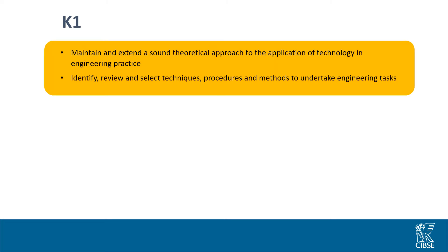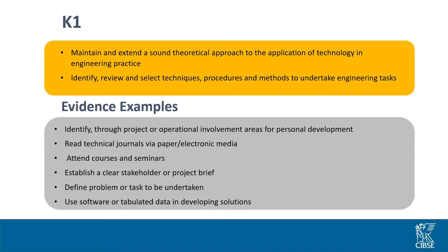K1 is all about Engineering Principles. You will need to address some of the engineering theory and techniques you have picked up during the course of your apprenticeship and how you have demonstrated these techniques — for example, how you have engaged in formal learning to broaden your knowledge, what new techniques you have learnt and what you have done to reinforce that knowledge. Evidence examples include reading technical journals, attending courses and seminars, establishing a clear stakeholder or project brief, defining problems, using software or tabulated data in developing solutions, or identifying through project or operational involvement areas for personal development.